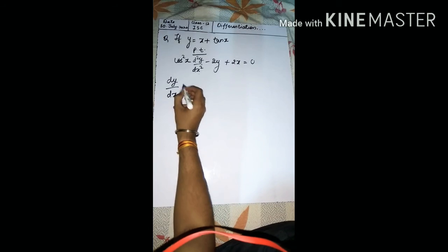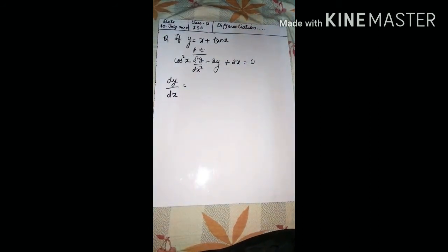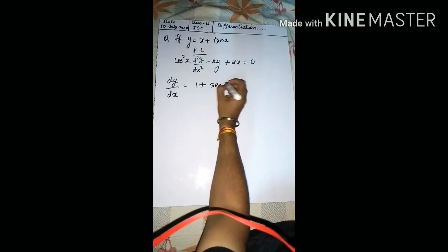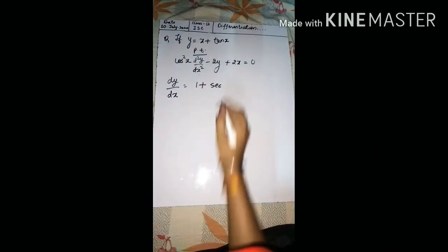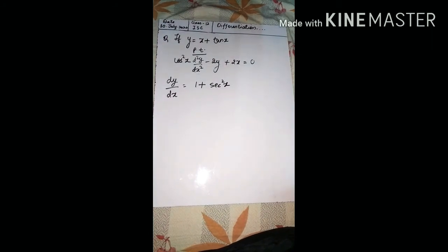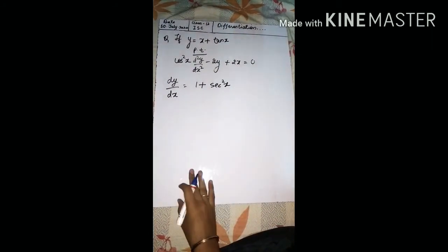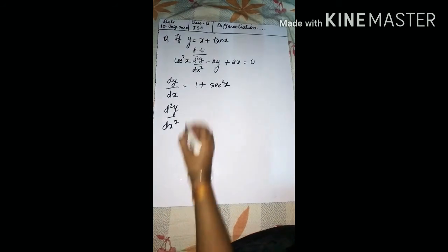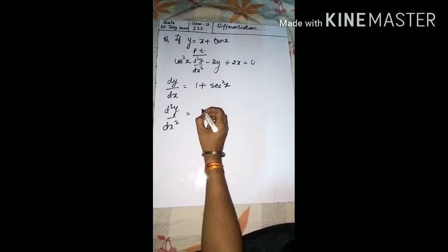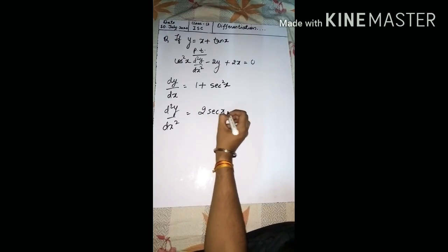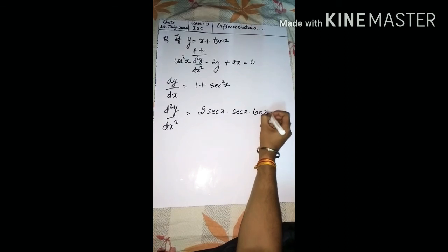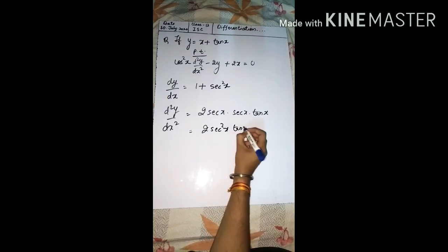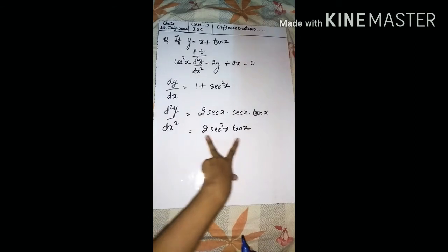Let us differentiate y = x + tan(x). y-dash = 1 + sec²x. Then again we differentiate to get d²y/dx². The differentiation of 1 is 0. For sec²x: 2 sec(x) times sec(x)tan(x) = 2 sec²x · tan(x). So d²y/dx² = 2 sec²x · tan(x).